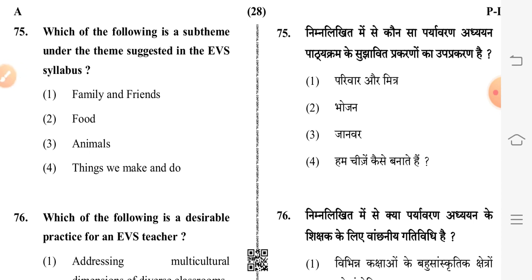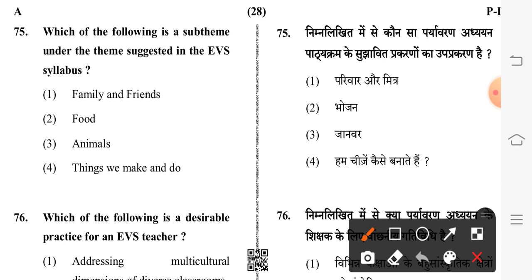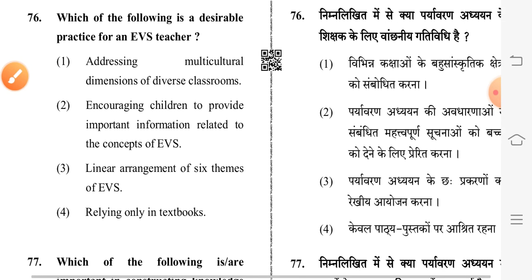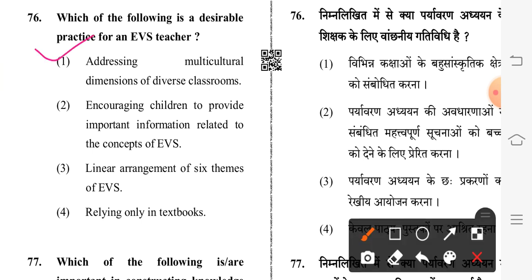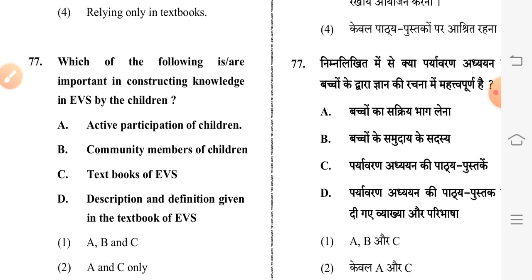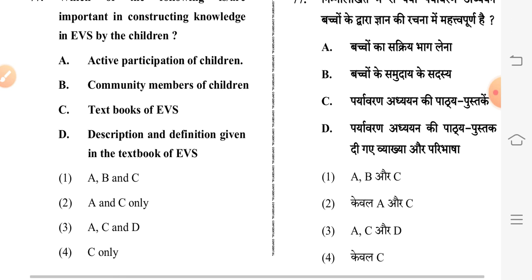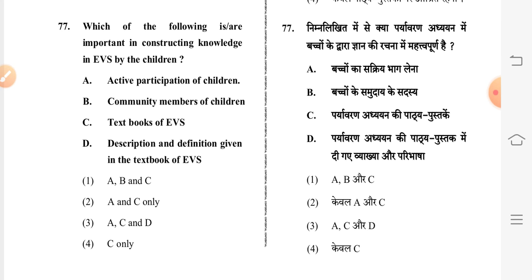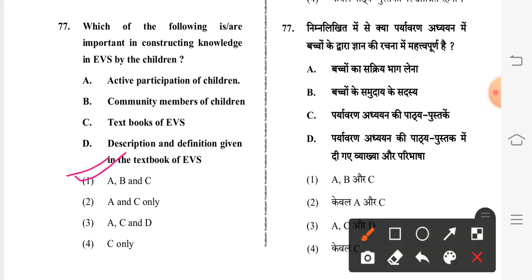Question 75: which of the following is a sub-theme under the theme suggested in the EVS syllabus? Third option is correct: animals. Question 76: which of the following is a desirable practice in EVS teaching? First option is correct: addressing multicultural dimensions of diverse classrooms. Question 77: what is important in constructing knowledge in EVS? Correct option includes all: active participation of children, community members, and EVS textbooks.